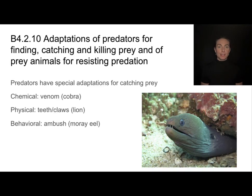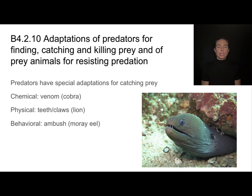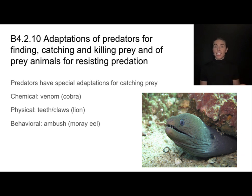What about organisms that eat other things? Predators often have very special adaptations for catching prey. Some have chemical adaptations — their bodies produce certain chemicals that help them, like venomous snakes such as the cobra. Some have physical adaptations like lions and bears, with big teeth and big claws. And others have behavioral adaptations — for example, this moray eel is very good at the ambush, hiding underneath a rock and then ambushing its prey.